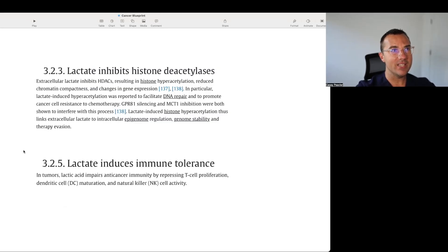Lactate can inhibit histone deacetylases. Extracellular lactate inhibits HDACs, resulting in histone hyperacetylation, reducing chromatin compactness and changes in gene expression. In particular, lactate-induced hyperacetylation was reported to facilitate DNA repair and promote cancer cell resistance to chemotherapy. GPR-81 silencing and MCT-1 inhibition were both shown to interfere with this process. Lactate-induced histone hyperacetylation, thus links extracellular lactate to intracellular epigenome regulation, genome stability, and therapy evasion.